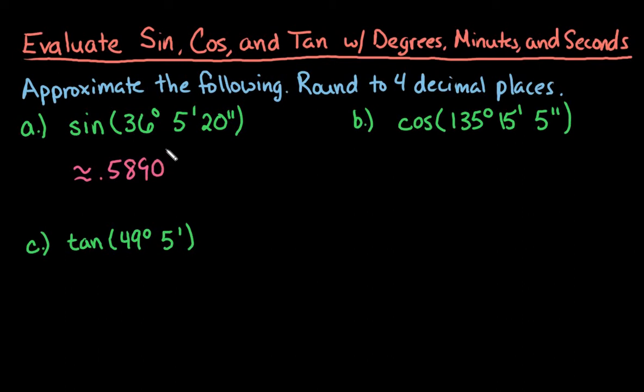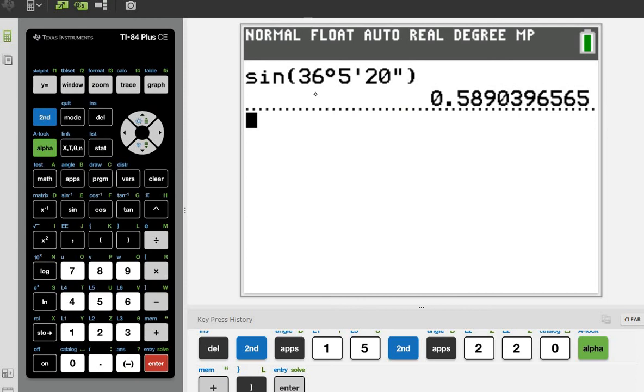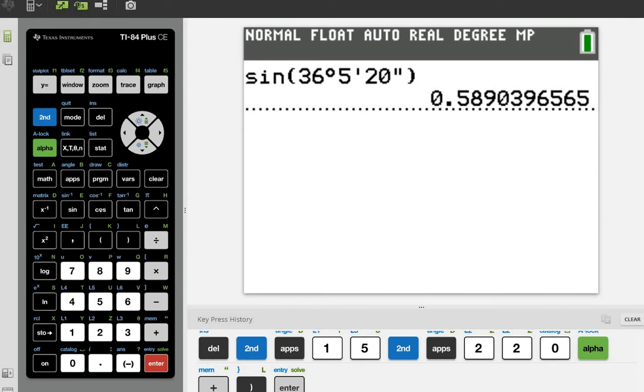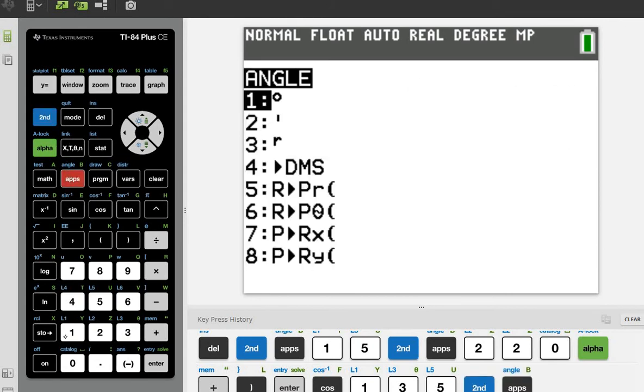You're finished. So we're going to move to the next one. The next one asks for cosine 135 degrees, 15 minutes and five seconds. So again, we're already in degree mode because I already changed it to degree mode. So since we're in degree mode, all I have to do is hit cosine and then plug in our values. So our first one would be 135, and we would just do second angle, option one.